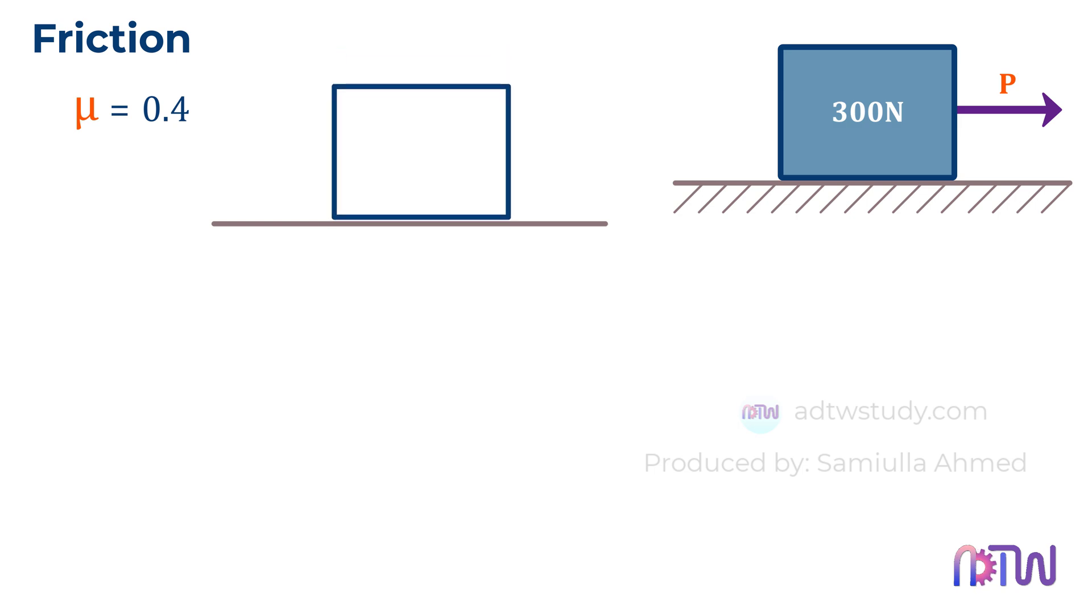This is our box with a weight of 300 newtons. We represent the force acting due to gravity with a central downward arrow. Additionally, we have this force P which is trying to pull the box, and we need to find its value. Here, we need to apply equilibrium conditions.